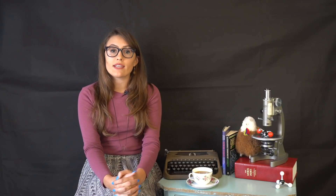Molecules with asymmetric polar bonds or lone pairs are polar. Due to the presence of asymmetric polar bonds or lone pairs, these molecules have areas of high and low electron density, leading to the formation of molecular dipoles.